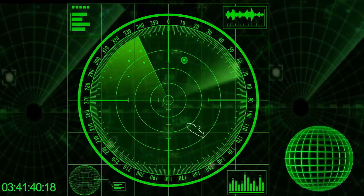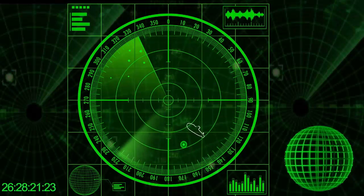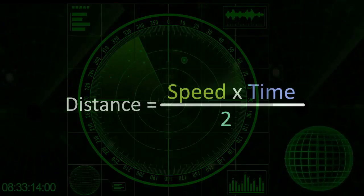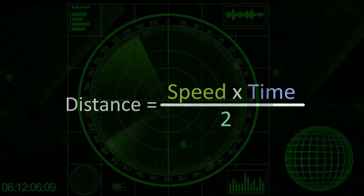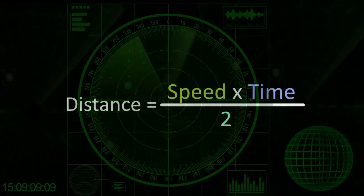It also calculates the distance of the object using this formula: Distance equals speed times time divided by two.